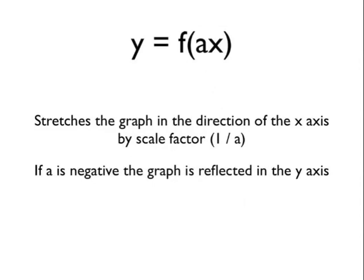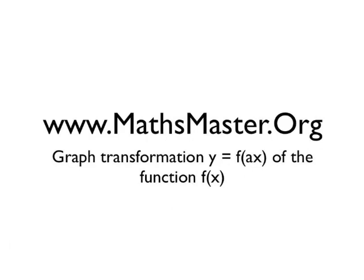To recap: we've looked at the graph transformation y equals f(ax), which stretches the graph in the direction of the x-axis. All x-coordinates are scaled by the scale factor 1 over a. If 'a' is negative, the graph is also reflected in the y-axis — it works the same as a positive 'a' with the same scale factor, but with that additional reflection. For more maths videos, please visit mathsmaster.org.